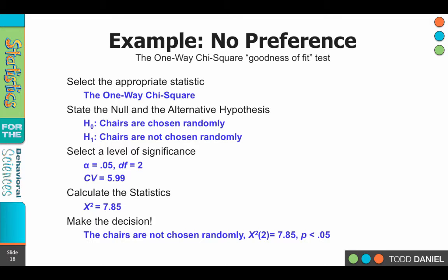So we will reject the null hypothesis that the chairs are chosen randomly, and instead embrace the alternative hypothesis, that the chairs are not chosen randomly. Our chi-square with two degrees of freedom equals 7.85, probability less than 0.05. And that is how we do a chi-square goodness of fit test for a situation of randomness or no preference.